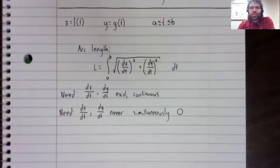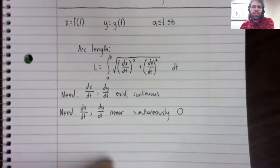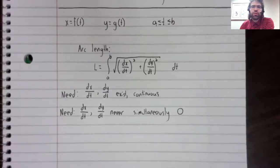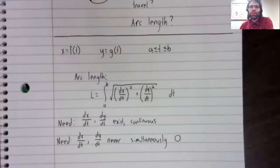The second requirement is a bit less obvious. The derivatives dx/dt and dy/dt can never be simultaneously zero.